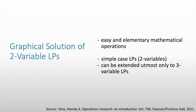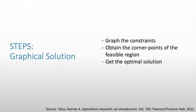So how do we go about the graphical method? There are three easy steps. First, you graph the constraints. Then, you have to obtain the corner points of the feasible region. Then, you have to substitute the corner point values into the objective function, and then you'll get the optimal solution.